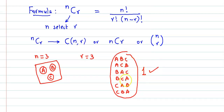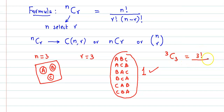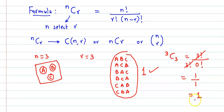Note that if this were permutation, the answer would be six, because there are six different arrangements. But here we are talking of selection. Let us apply the formula: 3C3 = 3! / (3! × 0!) = 3! / (3! × 1) = 1. So three factorial cancels with three factorial, and one divided by zero factorial equals one. So our final answer is one.